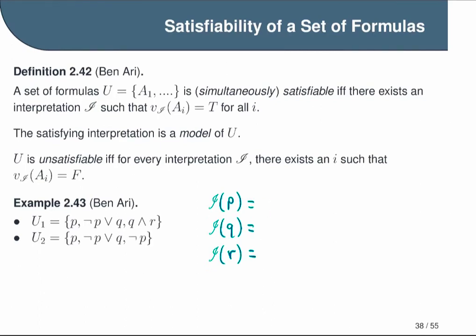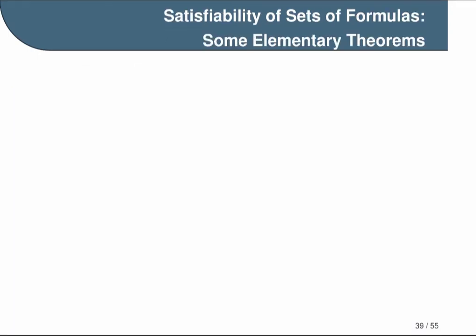In a second example, the last formula is replaced with not-p. This causes a problem: assigning p to true makes the last statement false, and the set is not satisfied. But assigning p to false makes the first statement false. There is no possible assignment for p that gives a satisfying interpretation, so the set is unsatisfiable. Before concluding, I want to introduce four basic but important theorems relating to satisfiability of sets — these will be important when developing automatic procedures for checking whether formulas are satisfiable or valid.